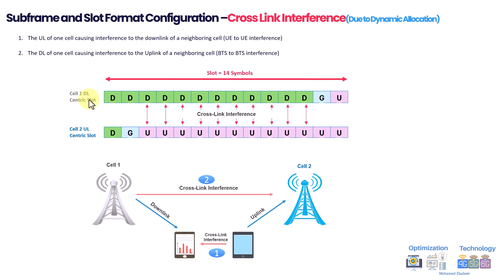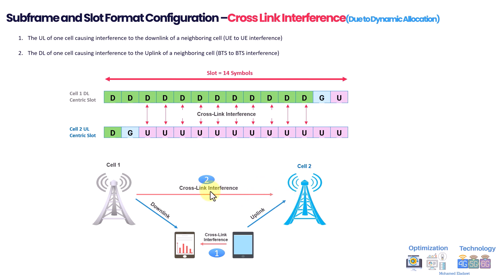This is where cross-link interference becomes a problem. For example, cell one, which is a downlink-centric slot transmitting downlink at a particular symbol, causes interference while the user is also transmitting uplink using the same frequency. As you know, downlink power is much higher, so this can cause severe interference in your uplink. This is one of the key things we need to take care of — it is called cross-link interference.